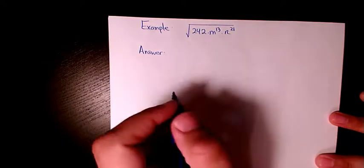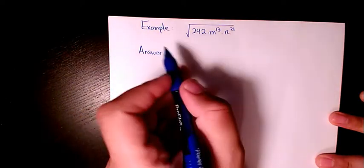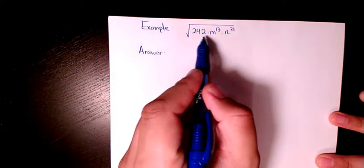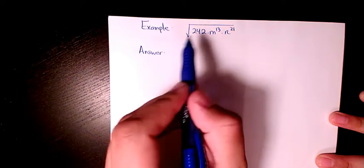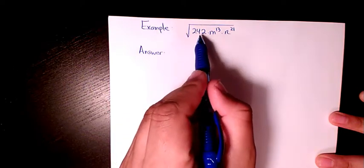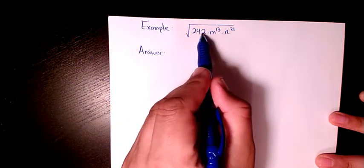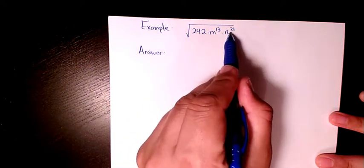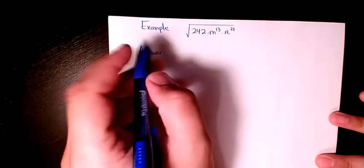What's up guys, this is Massey, welcome to my channel. In this video I want to show you how to simplify this radical expression: we have the square root of 242 m to the power of 13, n to the power of 21.